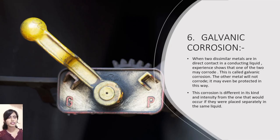Galvanic corrosion. When two dissimilar metals are in direct contact in a conducting liquid, experience shows that one of the two may corrode — this is called galvanic corrosion. The other metal will not corrode and may even be protected in this way. This corrosion is different in its kind and intensity from the corrosion that could occur if each metal were placed separately in the same liquid.